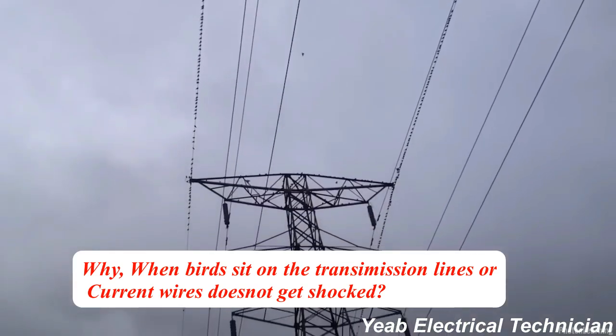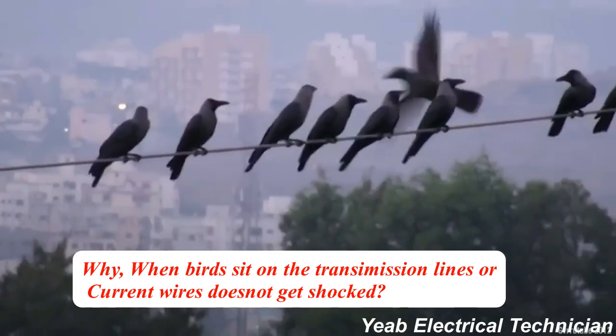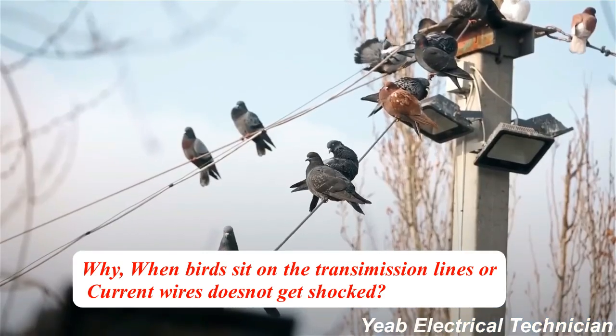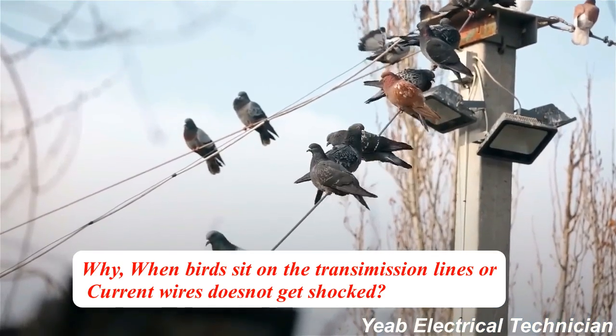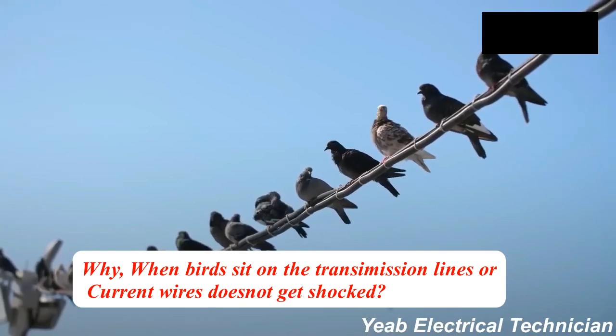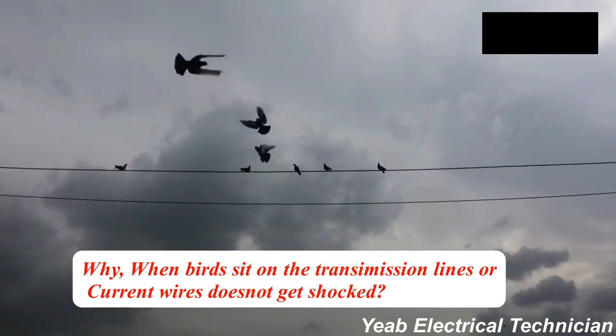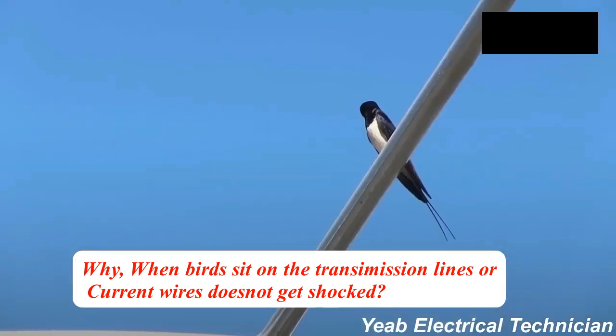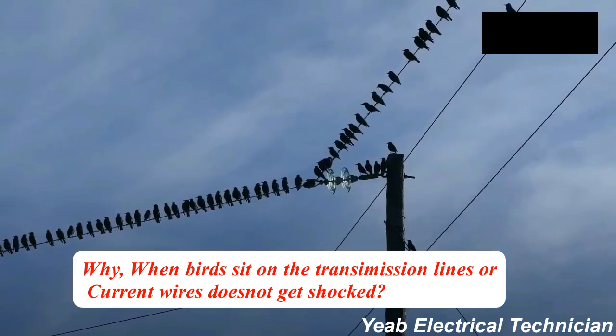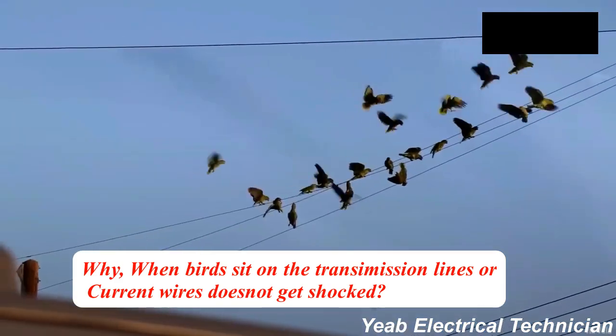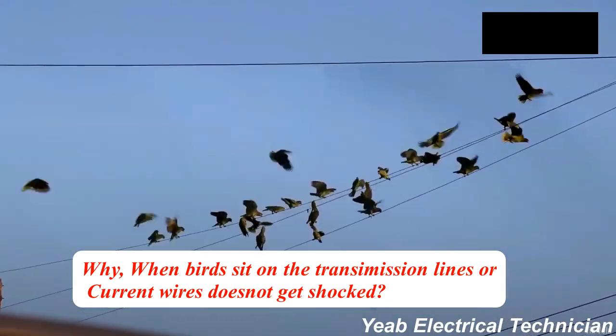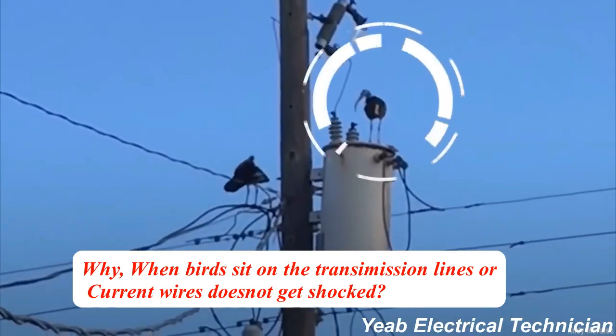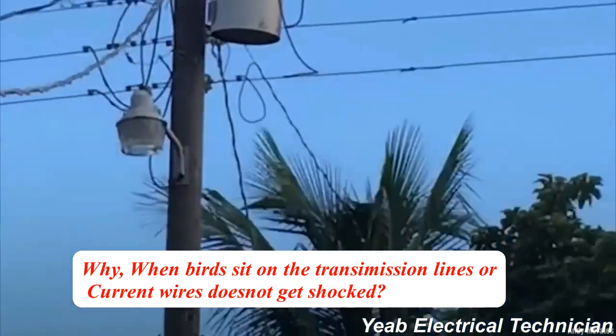So if a human touches a single line or single phase, he doesn't get a shock if he is in the air or not standing on the ground. If he is standing on the ground then touching the line or phase, he will get shocked because the ground on which he is standing behaves like neutral. In most electric lines the neutral is grounded, so the human who touches a line closes the circuit between phase and neutral.